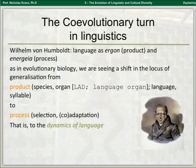The generative half-century focused very much on language as a product — with rules, with representations, with this somewhat fictitious language organ and essentialised concepts like language and syllables. I think we're moving more to a focus on process, selection of various sorts, and co-adaptation of various sorts.